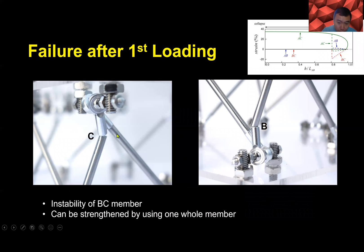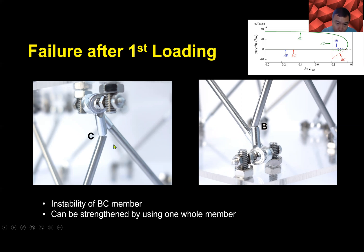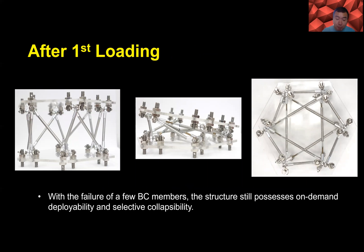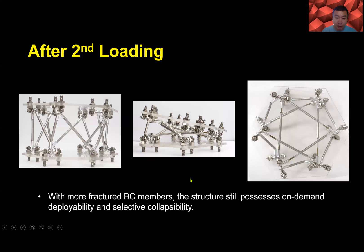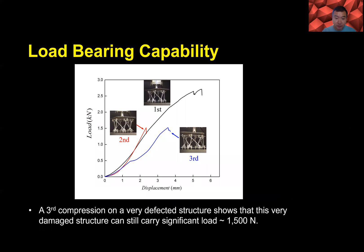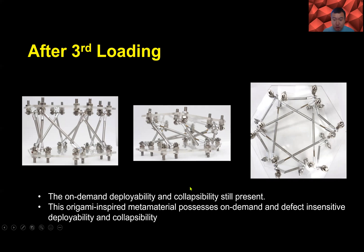We also found the failure mode: the BC member buckles under direct compression because of compressive strain. This can be strengthened by using a solid member. However, even after the first loading when the BC member failed, the structure can still possess on-demand deployability and selective collapsibility.